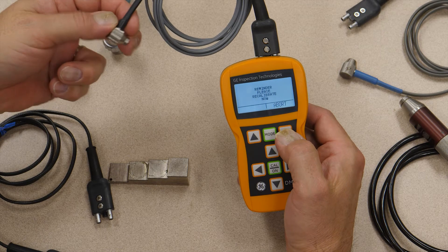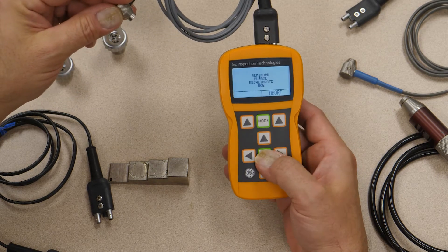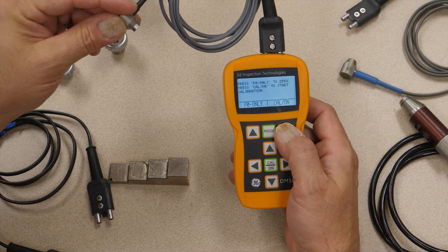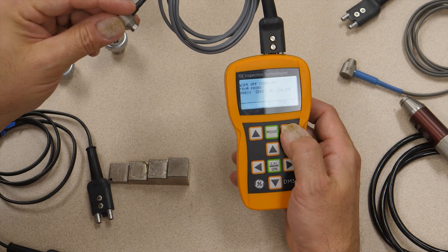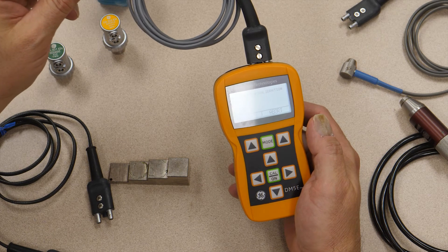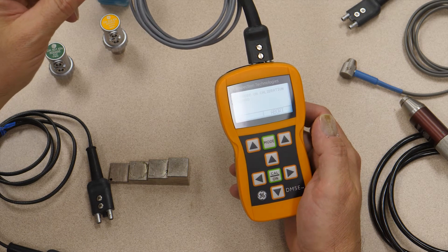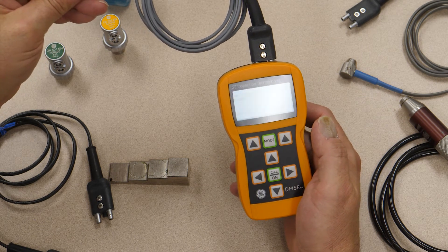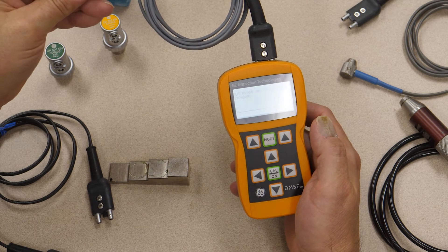All right, so we just plugged on a new probe. We need to run through a calibration. I'm going to do a full calibration. I zero the probe. And the DM5E typically uses auto zero, so it's pulsing and listening on each side of the probe right now as the probe is held in the air.